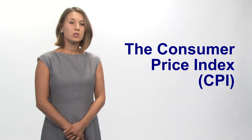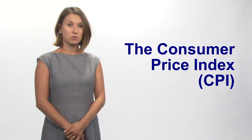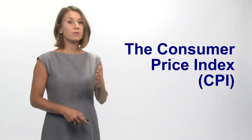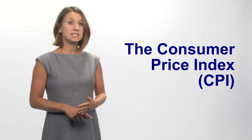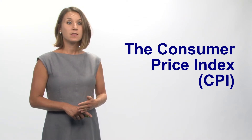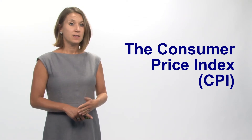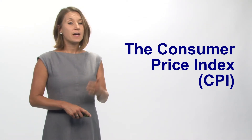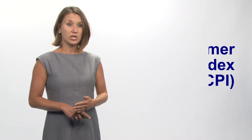One of the price indices that economists use very frequently is called the Consumer Price Index, and the Consumer Price Index gives us a snapshot of the cost of living for a typical consumer. Today we're going to be talking about how we calculate this Consumer Price Index. The first thing that we need to do is to fix a basket of goods — we look at what the typical consumer consumes and fix the quantity of goods in that basket. Secondly, we look at the prices of those goods, allowing the quantity to stay the same while allowing the prices to change.